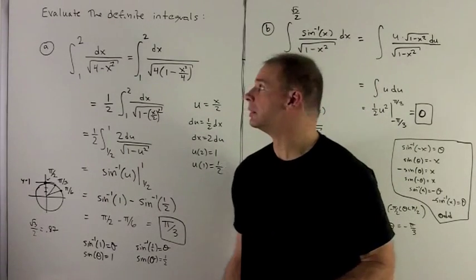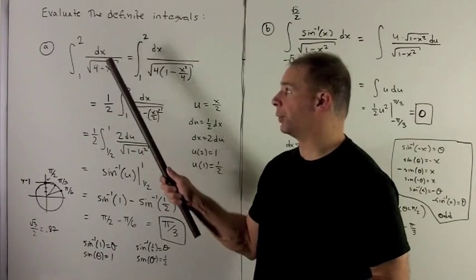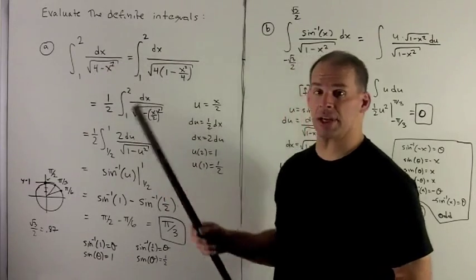Let's compute some definite integrals. We're going to first integrate from 1 to 2, dx over radical 4 minus x squared.